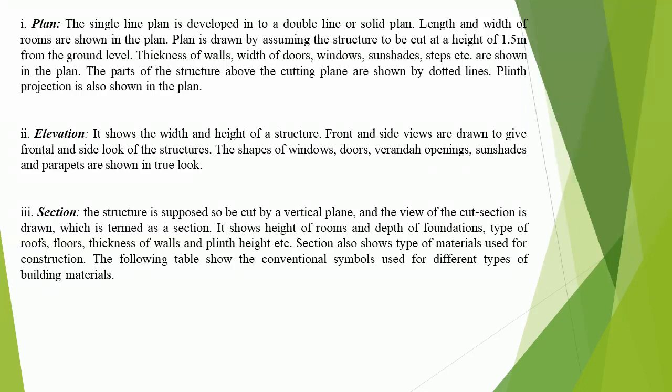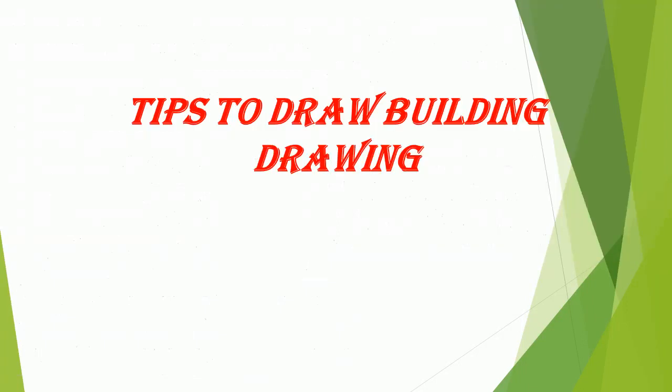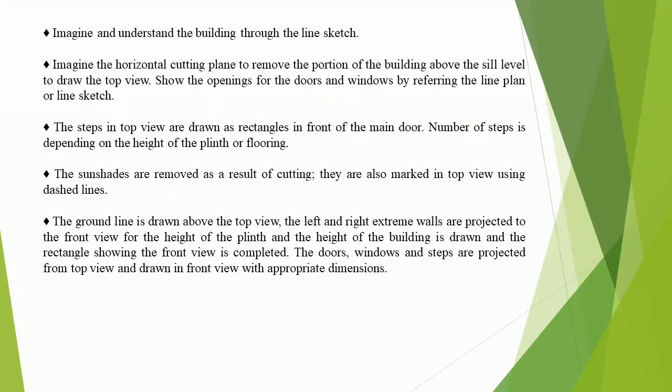Section also shows the type of materials used for construction. The following tables show the conventional symbols used for different types of building materials, and symbolic representation of some civil engineering materials. Tips to draw building drawing: imagine and understand the building through the line sketch.